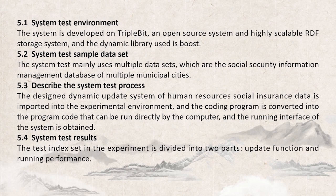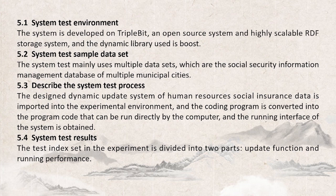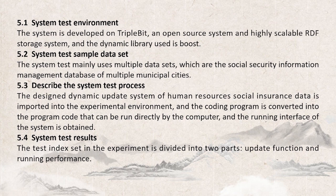System test environment: the system is developed on a triple-bit open source system and highly scalable RDF storage system, and the dynamic library used is Boost. System test sample datasets: the system test mainly uses multiple datasets, which are the social security information management databases of multiple municipal cities. System test process: the designed dynamic update system of human resources social insurance data is imported into the experimental environment, the coding program is converted into program code that can be run directly by the computer, and the running interface of the system is obtained.